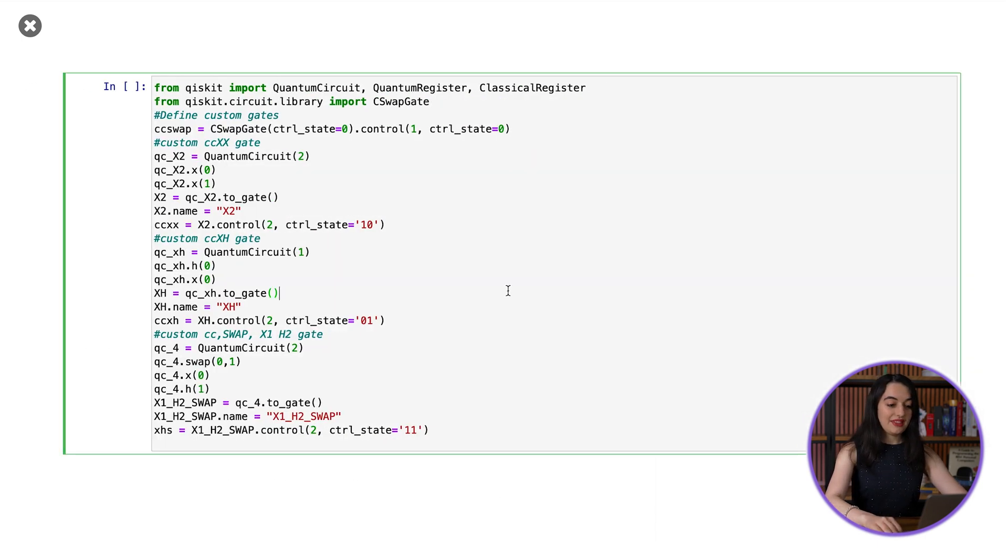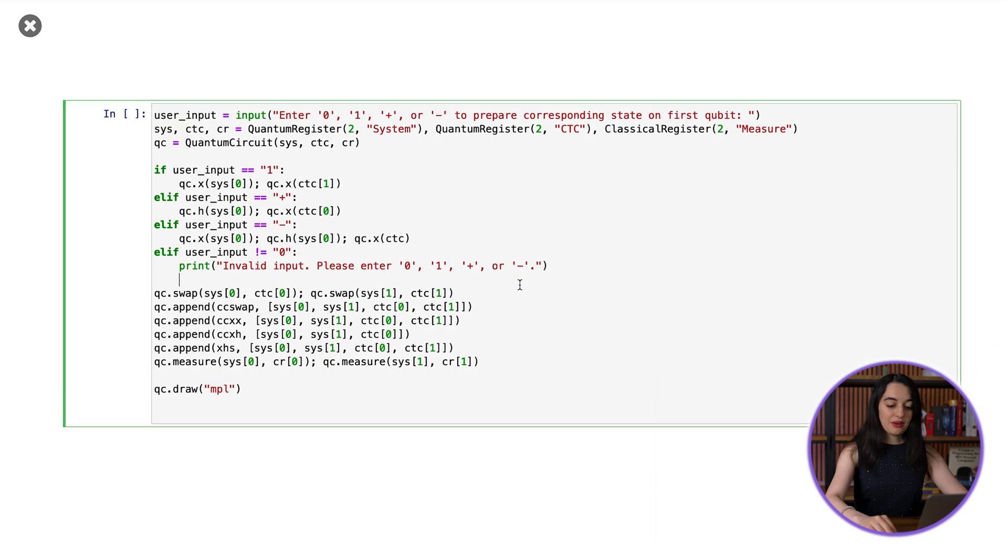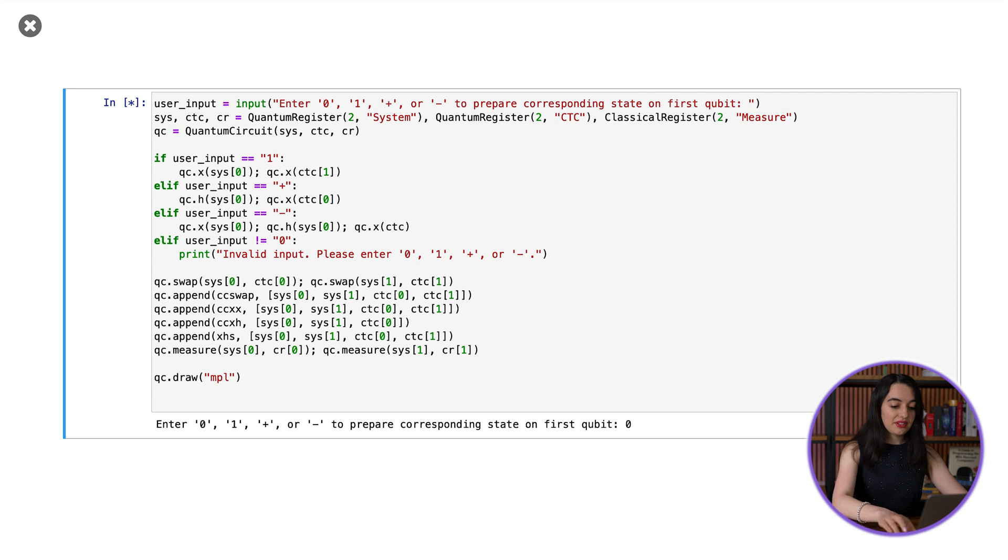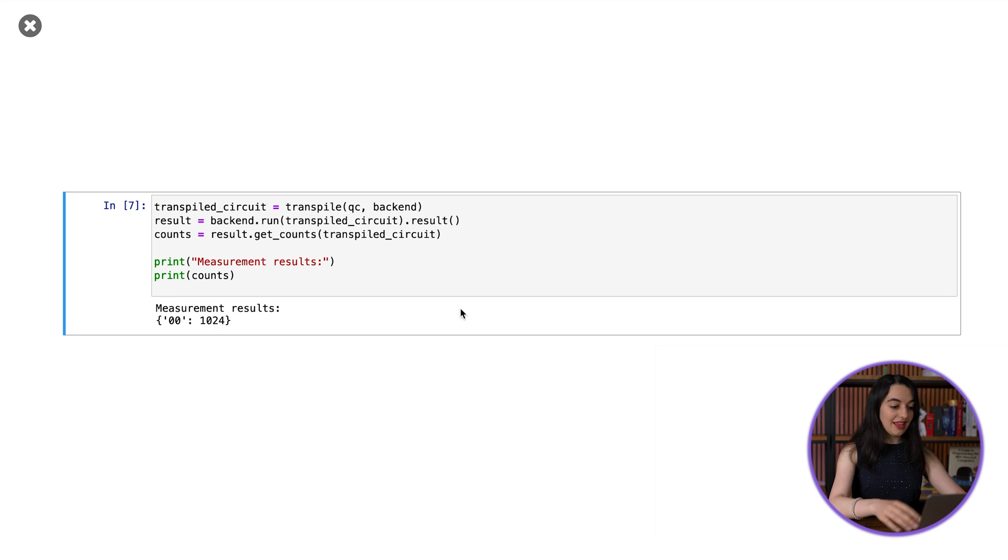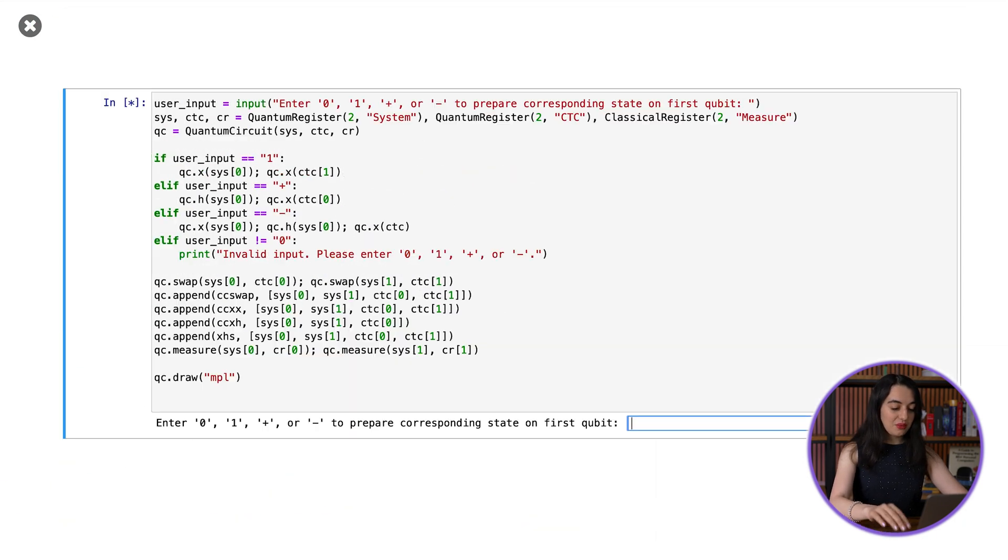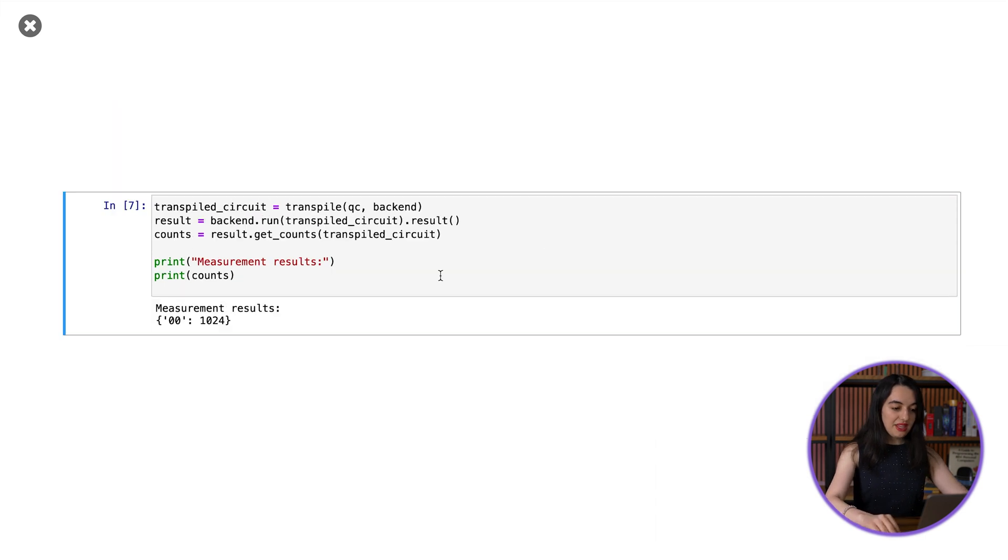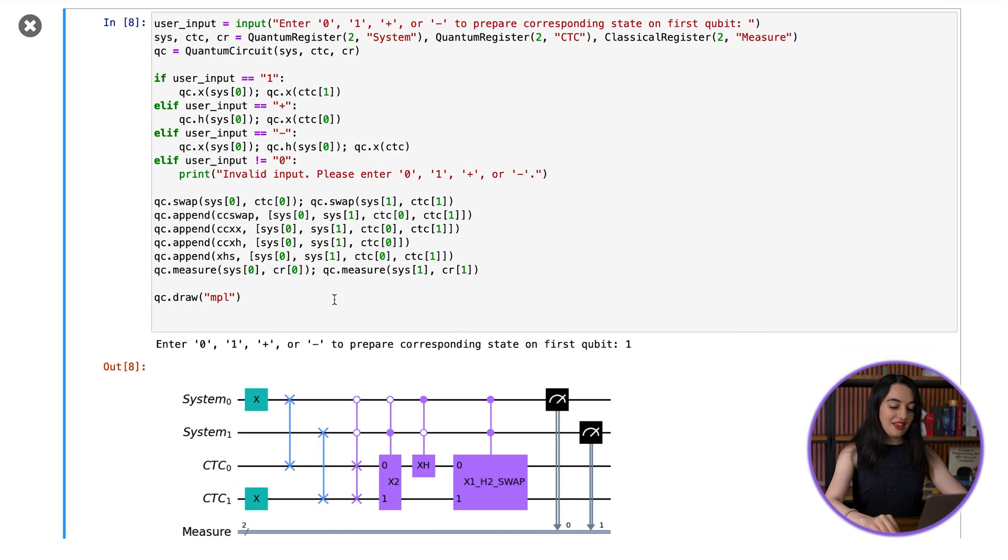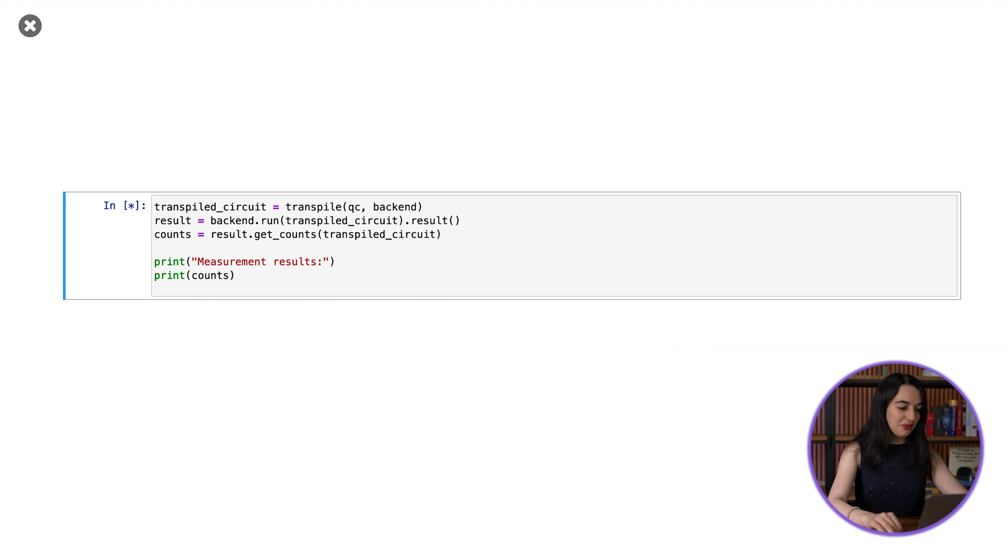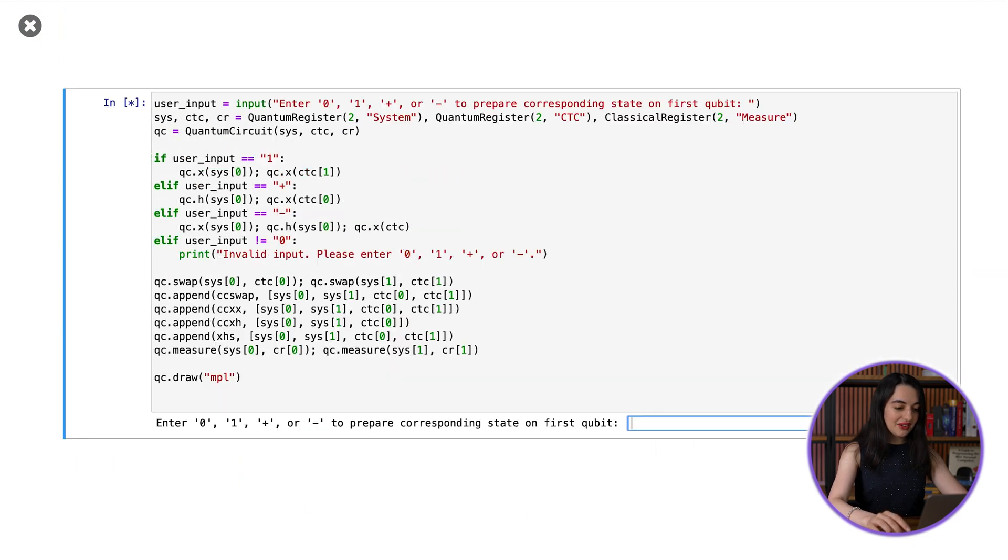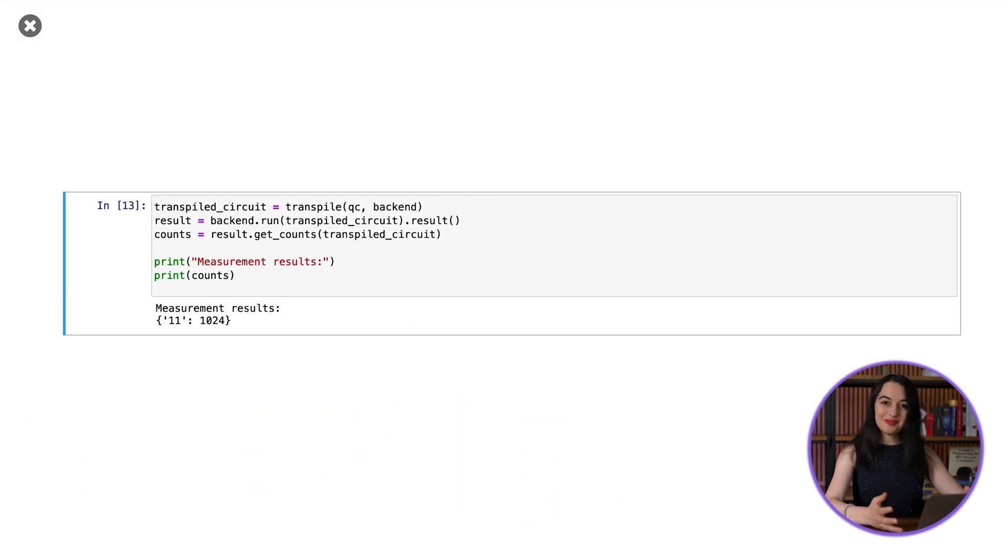So let's try out the circuit. When we run it with an input of zero, so it's the circuit, then we run it and we get 0,0. If we run it with an input of one, we get 1,0. If we run it with an input of plus, then we get 0,1. And if we do an input of minus, then we get 1,1.